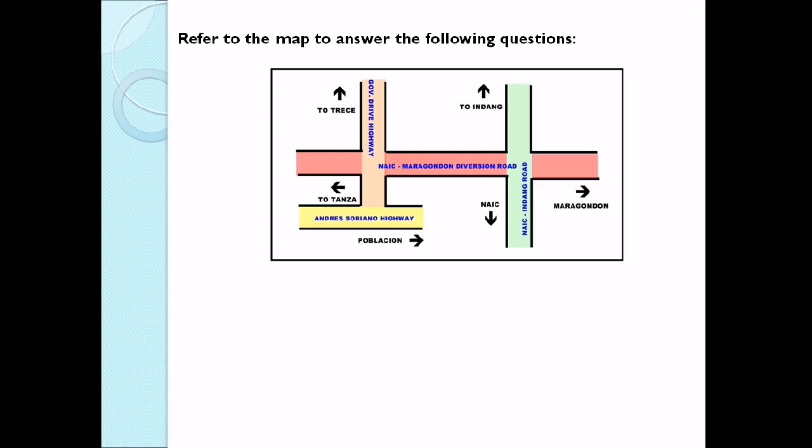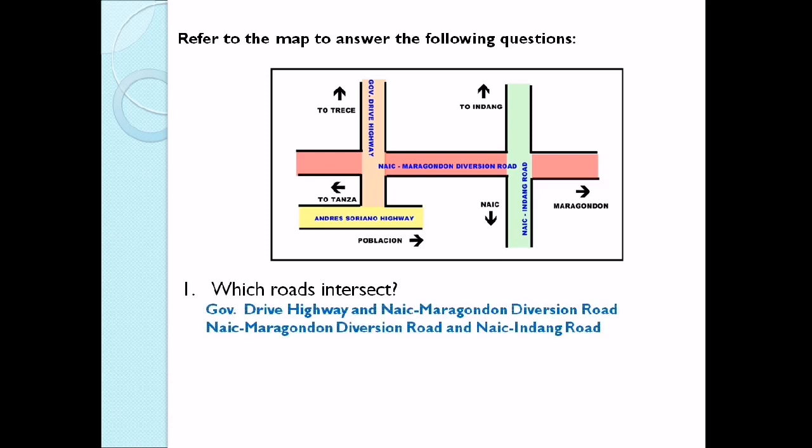We will refer to the map to answer the following questions. Number 1: Which roads intersect? Governor Drive Highway intersects Naikmaragondon Diversion Road. Naikmaragondon Diversion Road intersects Naikindang Road.